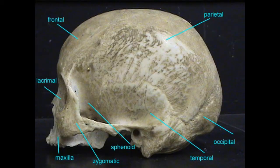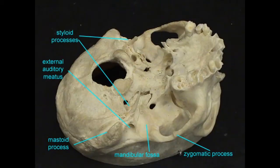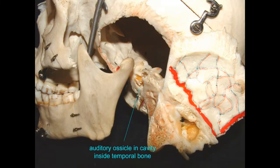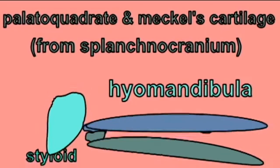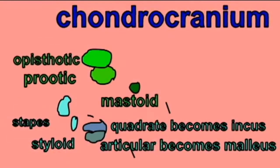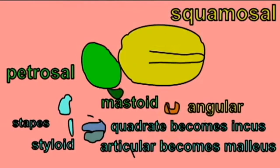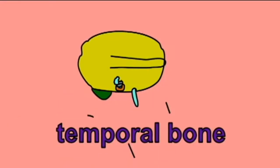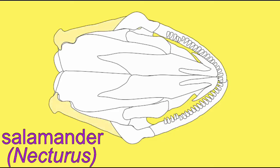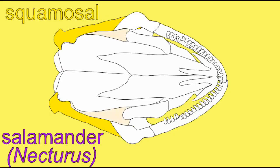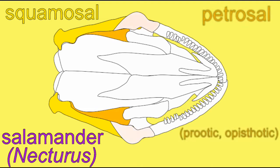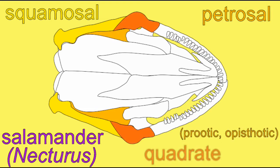In humans and in other mammals, the complex temporal bone is composed of the fusion of separate elements, including the squamosal bone, which forms the jaw joint, the petrosal bone, which surrounds the middle and inner ear, and the quadrate, which composes one of the small middle ear bones. In salamanders such as Nectoris, these are three separate bones of the skull that do not form a composite temporal bone.